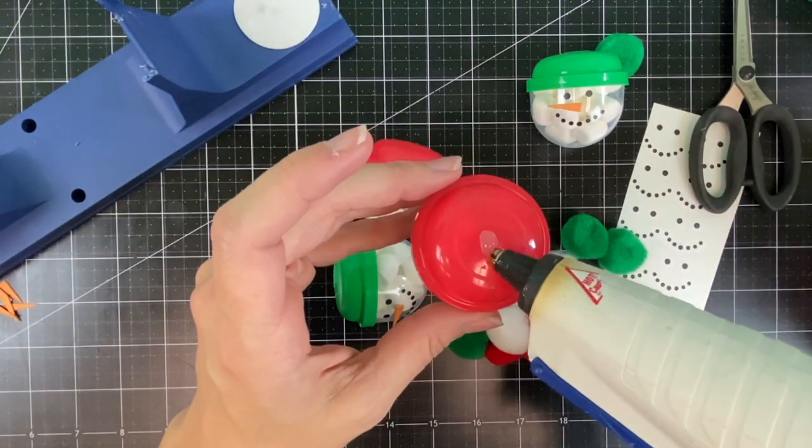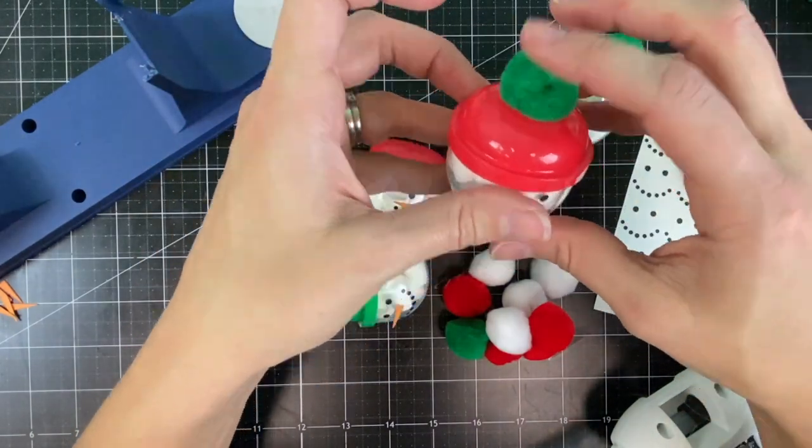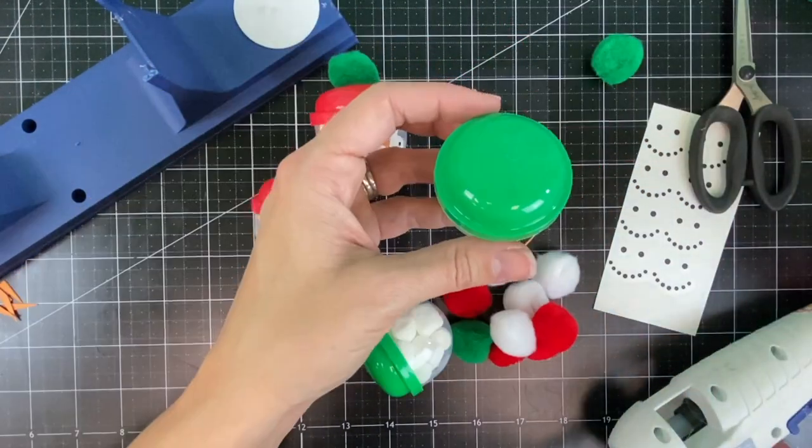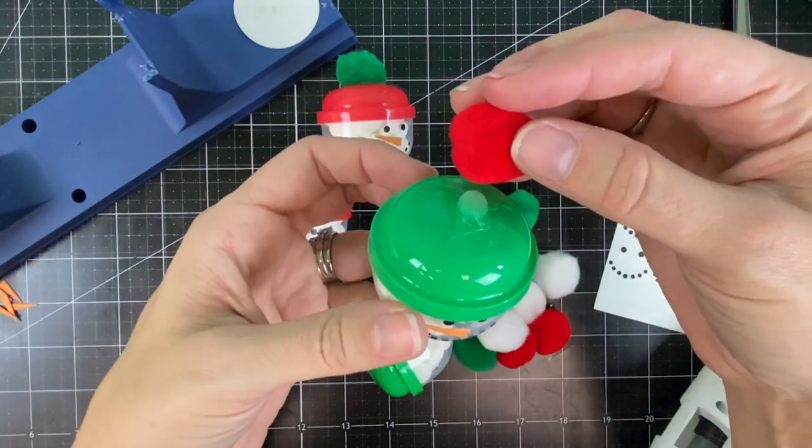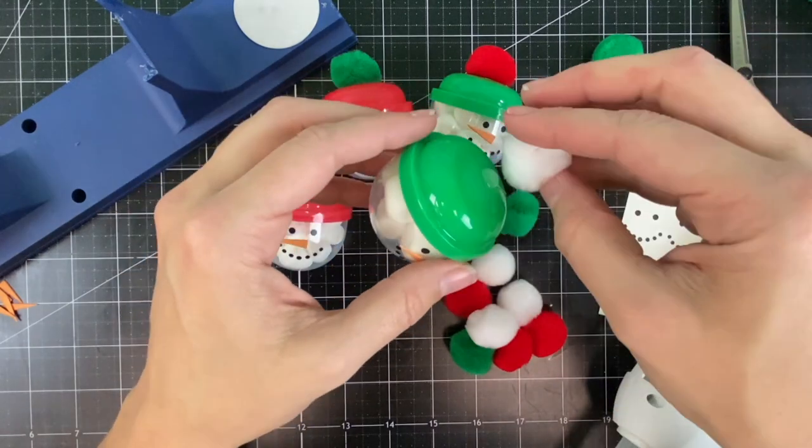This is going to look like the snowman's little hat and I recommend a glue gun for this step. However I did find that glue dots work as well if you have any of those large glue dots and you don't want to get out the hot glue gun.